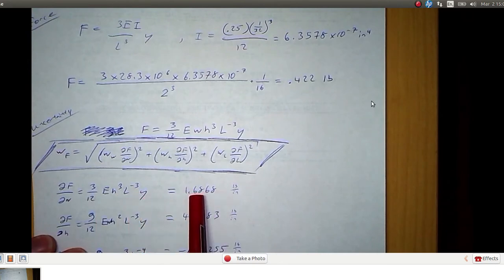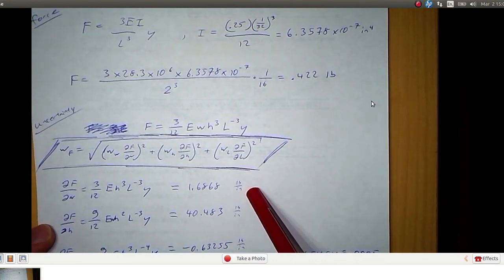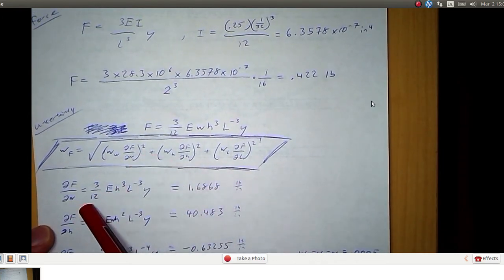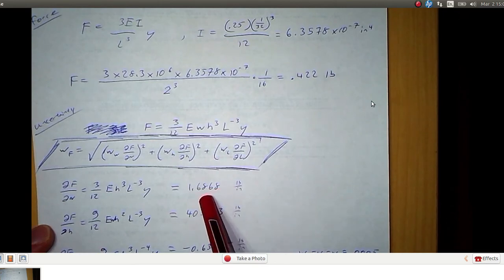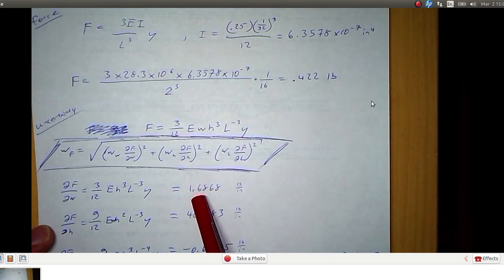And when we substitute in these values for E, h, and L, and Y, we come up with 1.69 pounds per inch. So that's the partial derivative of force with respect to width. So every inch that width changes, we're going to have to add 1.69 pounds.